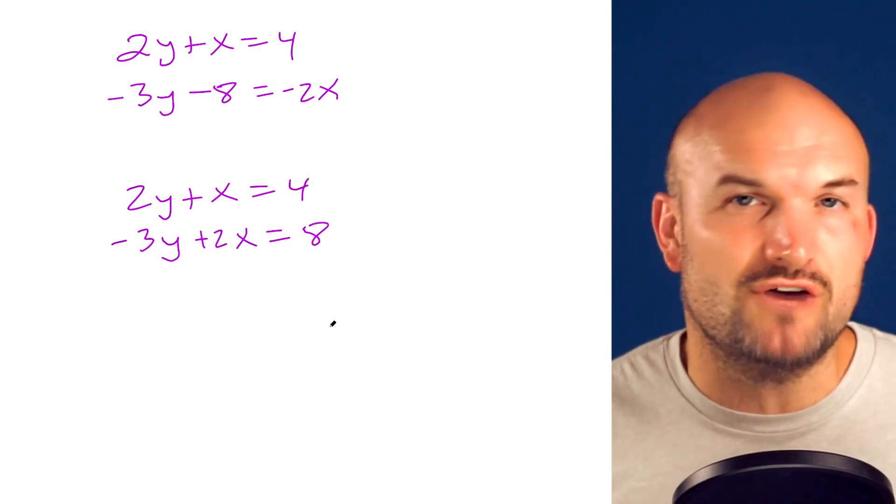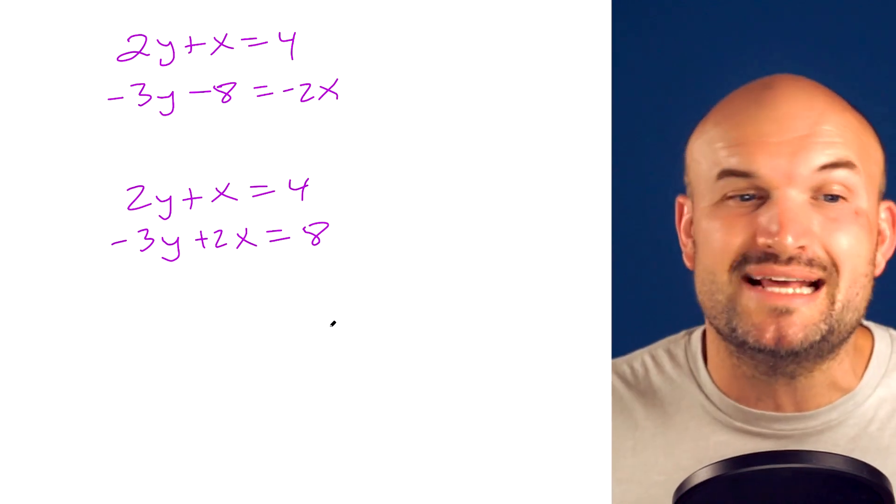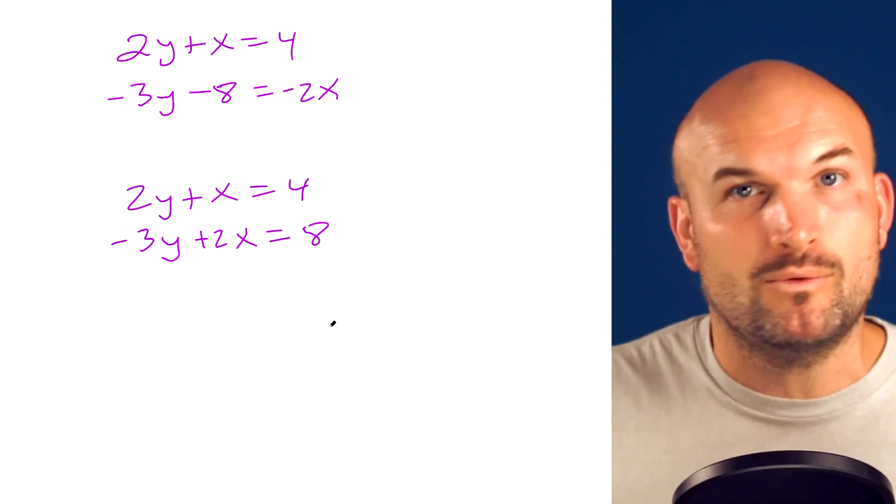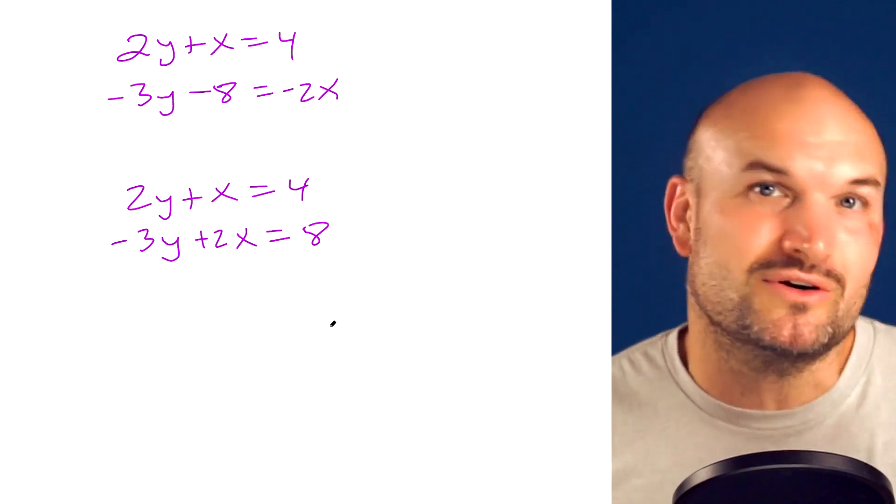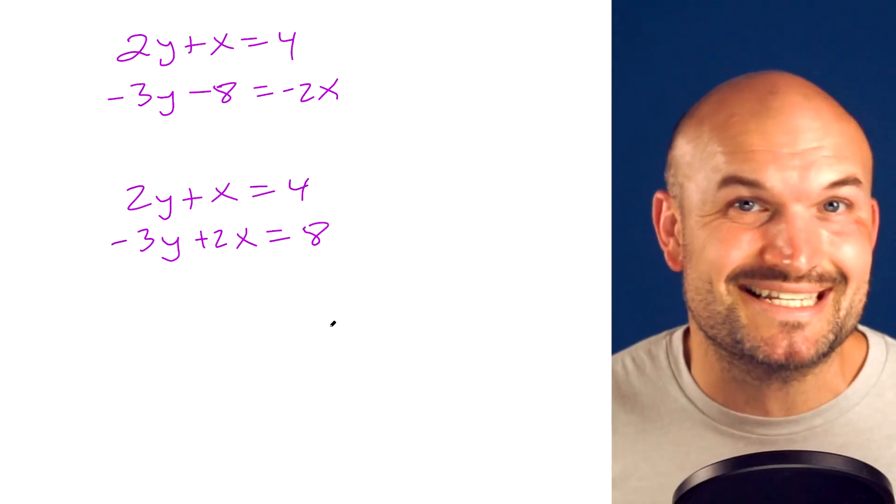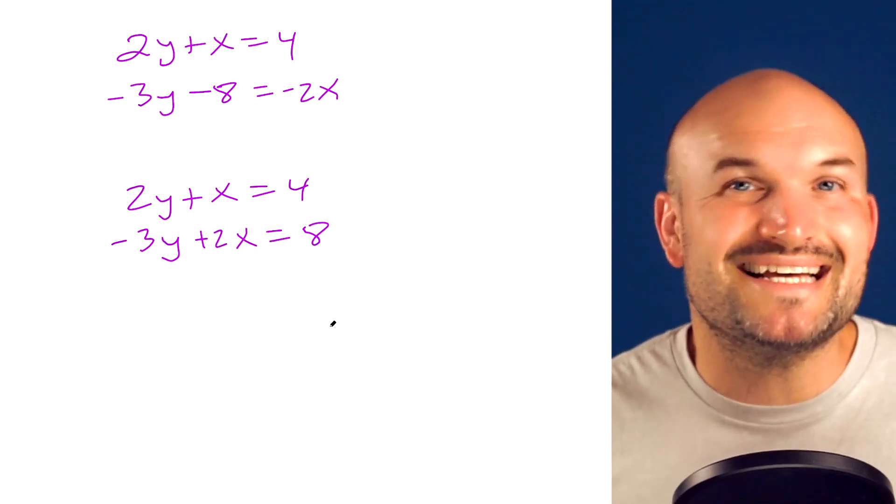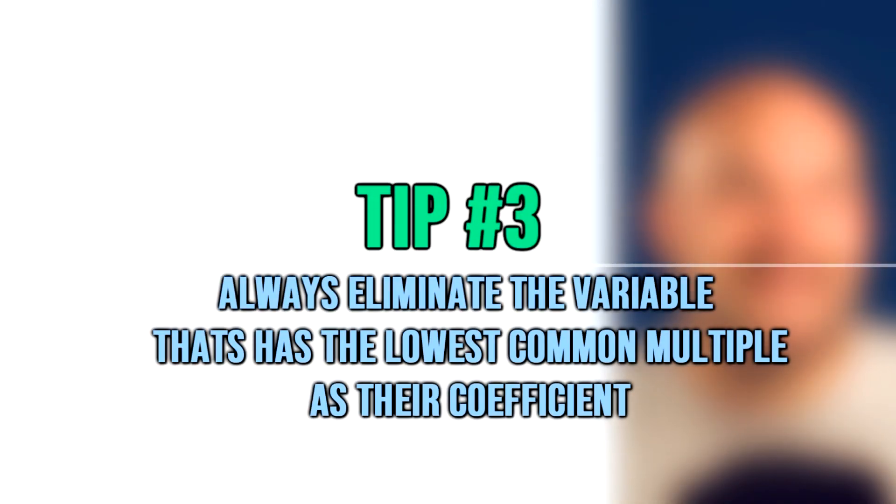But if you remember like substitution, we could solve for the X or for the Y. And that's the same case for elimination. We can either choose to eliminate the Xs or we can choose to eliminate the Ys. Now, again, just like how we had the choice of which one should we choose, substitution or elimination, we also have the choice which one should we choose, which variable should we eliminate, the Xs or the Ys. So to help you make that decision a little bit easier, I want you to remember tip number three. Always eliminate the variable that has the lowest common multiple as their coefficients.